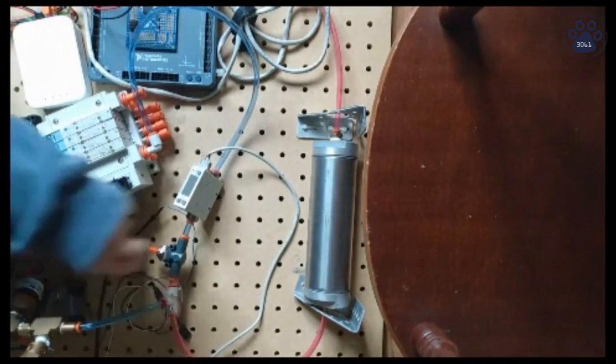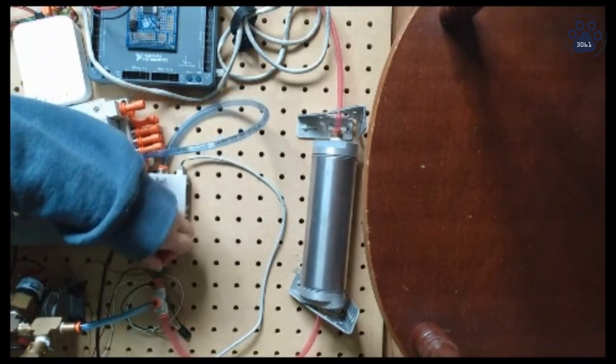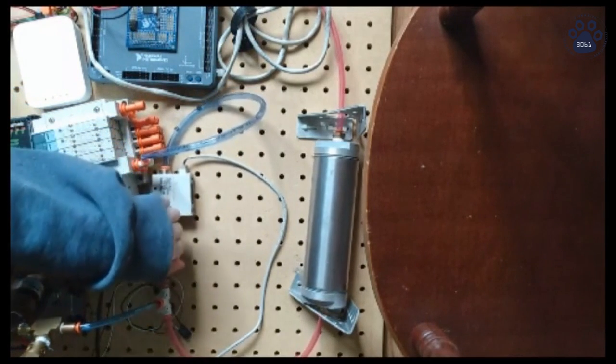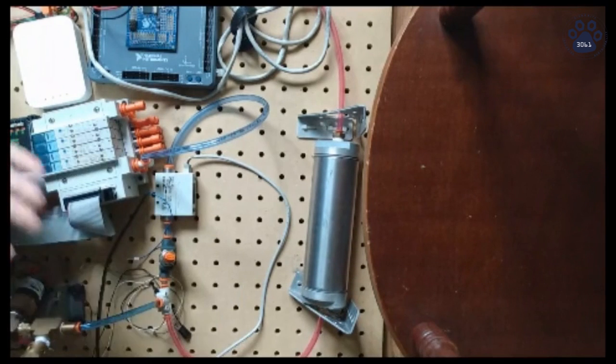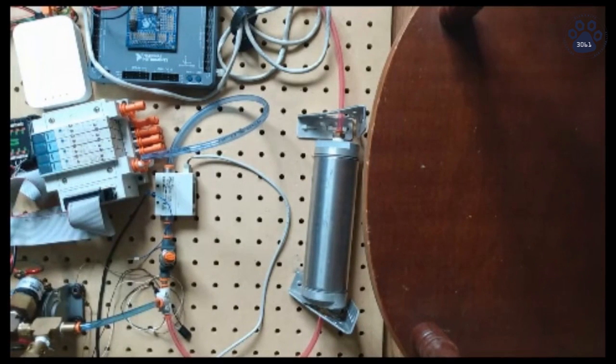And an important safety component is the pressure release valve. When you open this valve, it releases all of the air from the system, which is really important in case something breaks or the system becomes unstable, or just for releasing all the air before you put the board away.